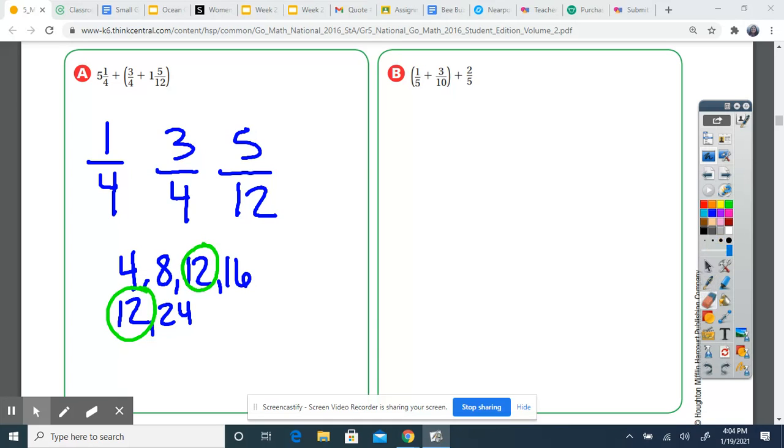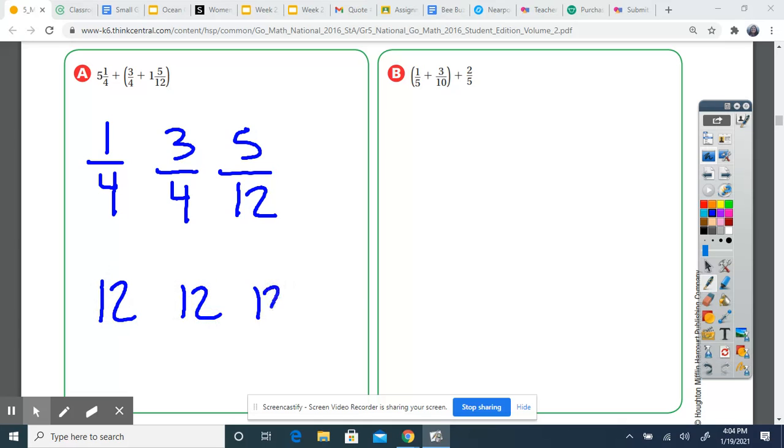So now I know that all three of my denominators need to have a 12 on the bottom. So now I need to ask myself, starting with one fourth: What do I multiply by four to get 12? Four times three gives me 12, so I'm also multiplying the numerator by three. One times three gives me three.